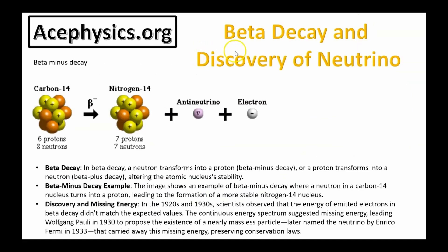On this slide, I'll briefly talk about beta decay and the discovery of the neutrino. In beta decay, a neutron transforms into a proton — this is called beta minus decay — or a proton transforms into a neutron, beta plus decay, changing the atomic nucleus. The image shows an example of beta minus decay where a neutron in a carbon-14 nucleus turns into a proton, leading to the formation of a more stable nitrogen-14 nucleus.